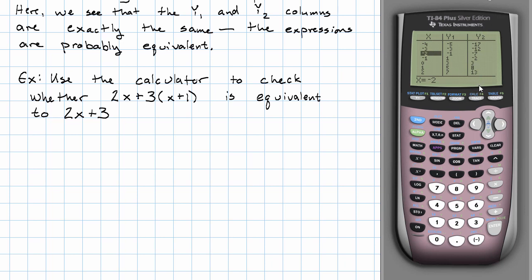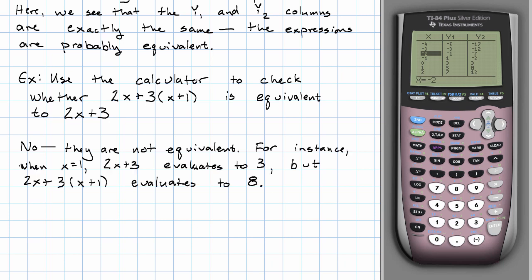So that suggests, in fact, it shows that they are not equivalent. Remember to show that they're not equivalent, we just need to find one number for which the two expressions evaluate to different values. So we could say, we see that when X is 1, 2X plus 3 evaluates to 5. Remember we had 2X plus 3 entered in Y1. But the other expression evaluates to 8. And of course 5 is different from 8. Again, this method will show us for sure that two expressions are not equivalent. It'll just make us pretty sure that two expressions are equivalent.